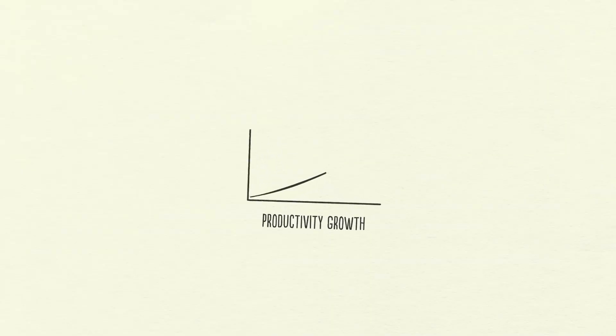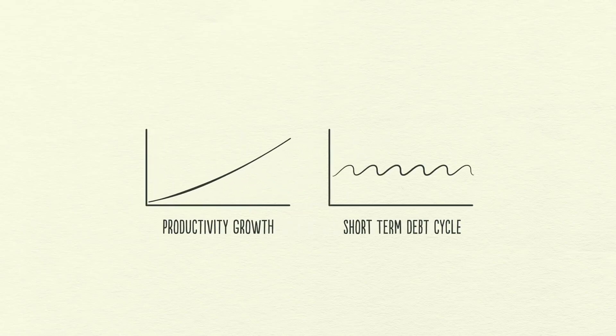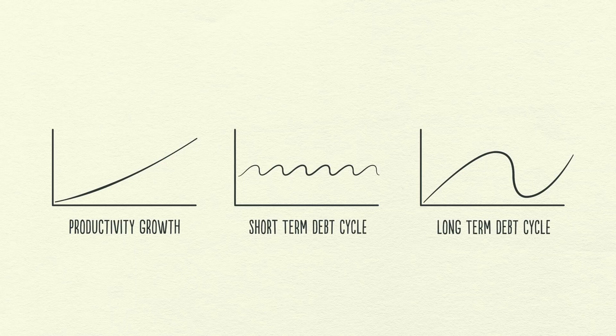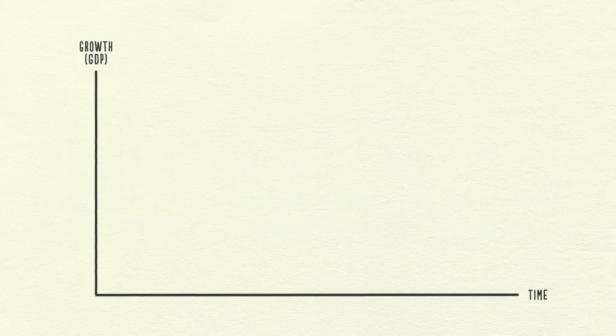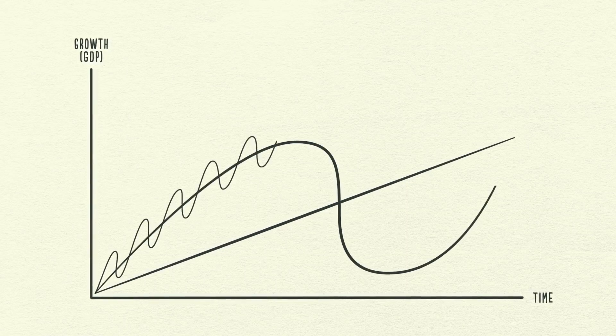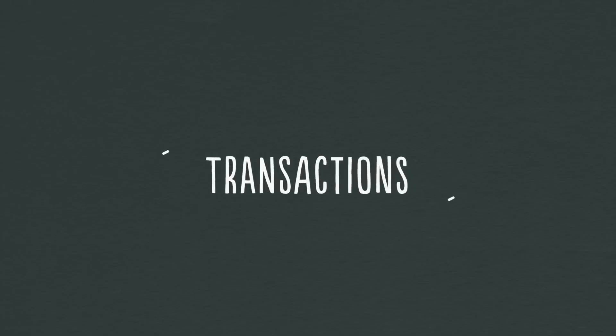Number one, productivity growth. Number two, the short-term debt cycle. And number three, the long-term debt cycle. We'll look at these three forces and how laying them on top of each other creates a good template for tracking economic movements and figuring out what's happening now. Let's start with the simplest part of the economy, transactions.